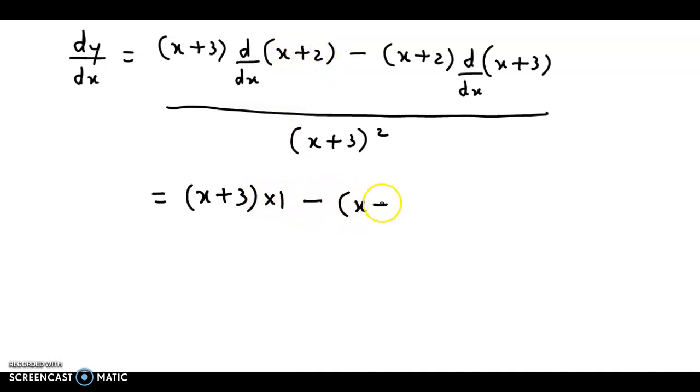Minus (x+2) times... Again, the derivative of these two terms: derivative of x is 1, derivative of 3 is 0. So the overall derivative is 1, divided by the denominator (x+3)². Now let us simplify this.